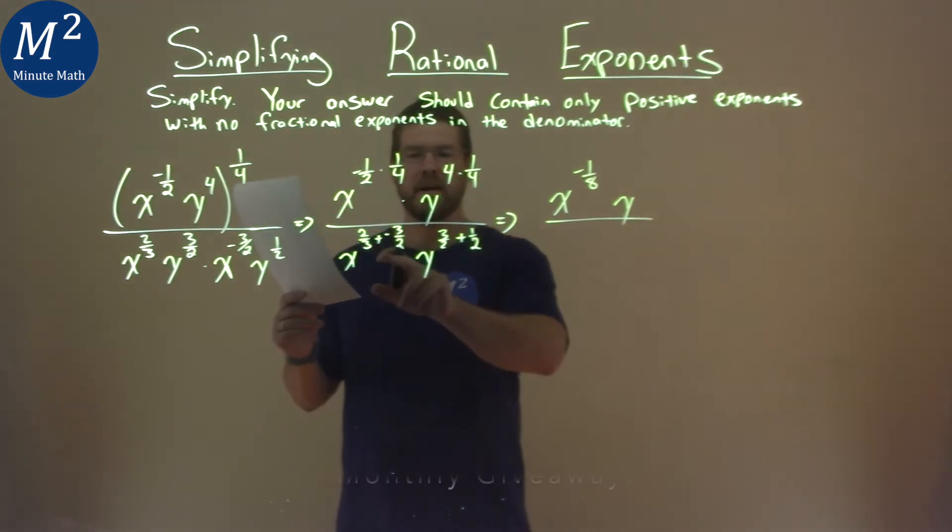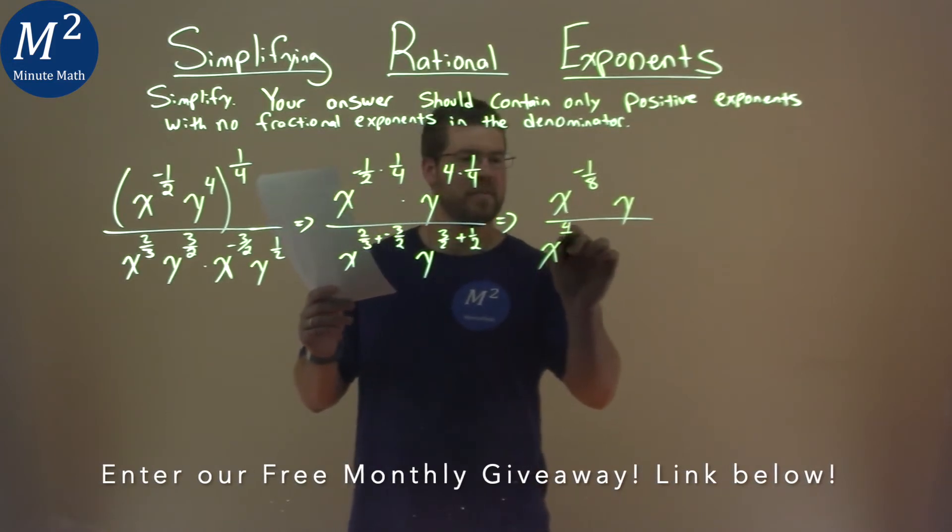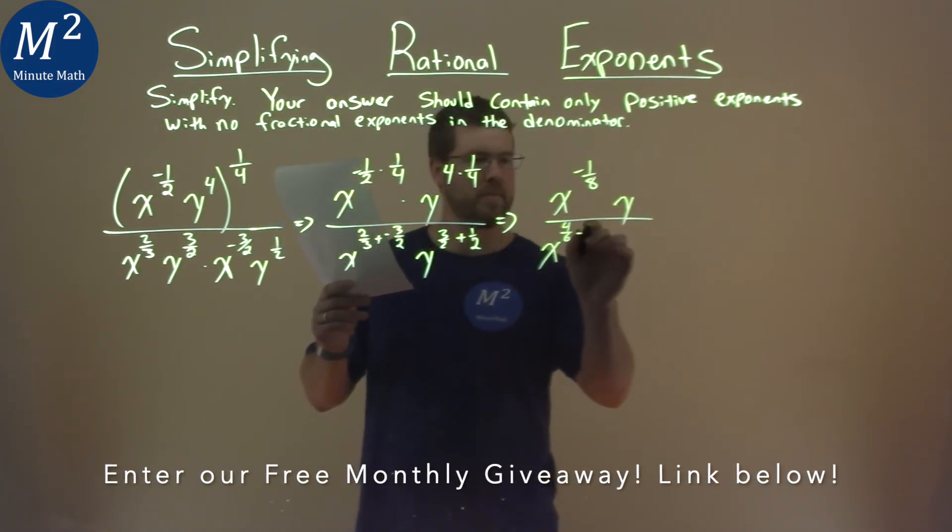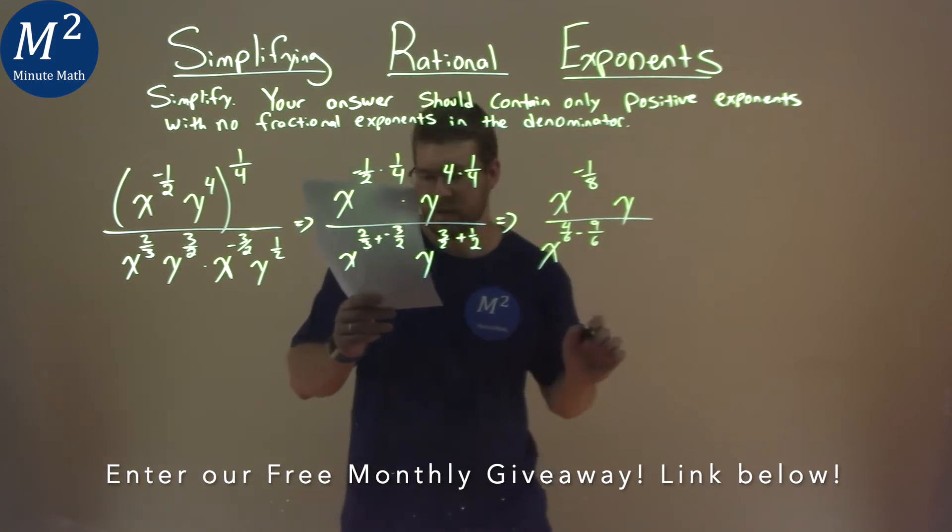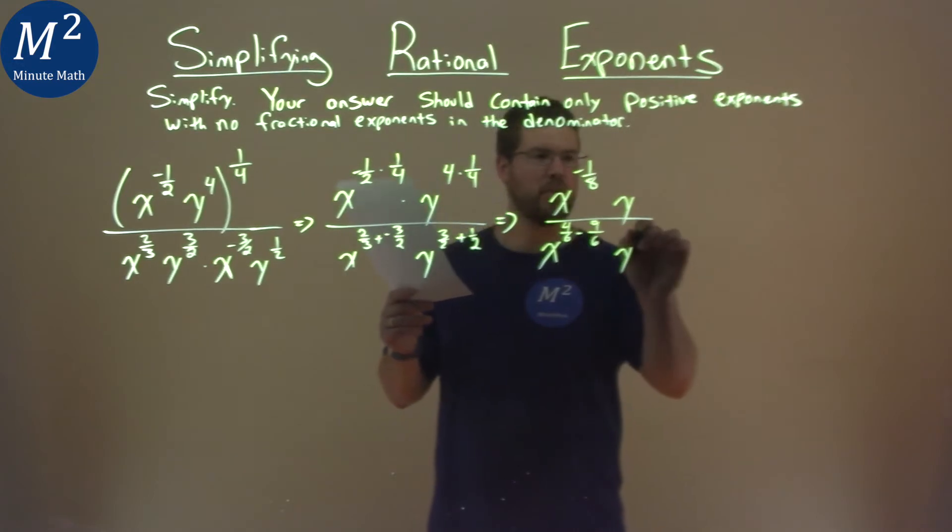Denominator, we need to find a common denominator with our fractions. So we have x now to the four-sixth minus, same as plus a negative, nine-sixth. And then y, three-halves plus one-half is already there, that's a four-halves.